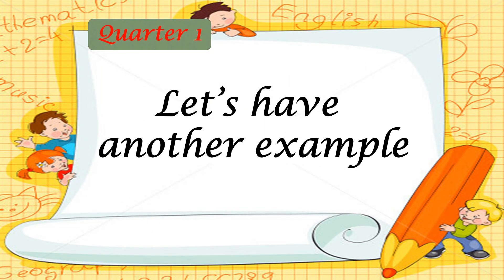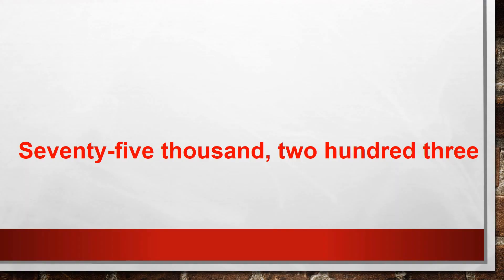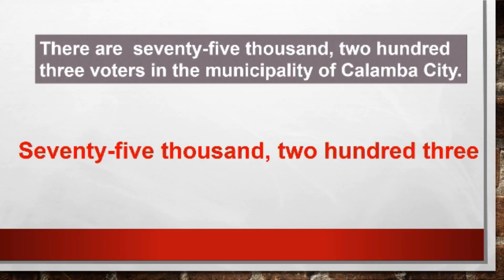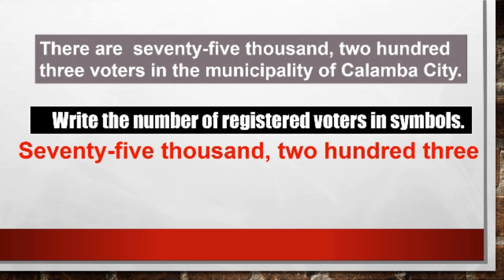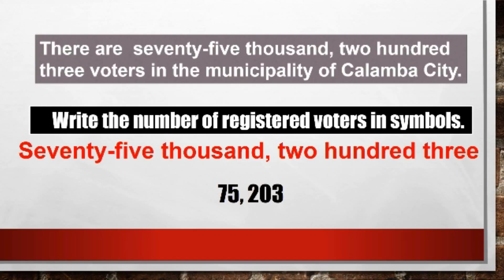Let's have another example by reading the problem: There are 75,203 voters in the municipality of Kalamba City. Do you know how to write 75,203 in symbol? If you have mastered reading and writing numbers, you could easily write it as 75,203. But if you're a beginner, you can use the steps in reading and writing numbers.